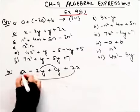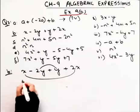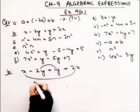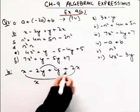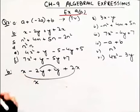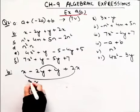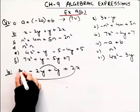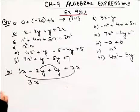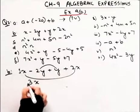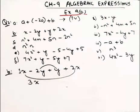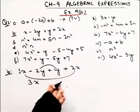For the x terms: 2x + 1x — how much will that be? That will be 3. So we get 3x.